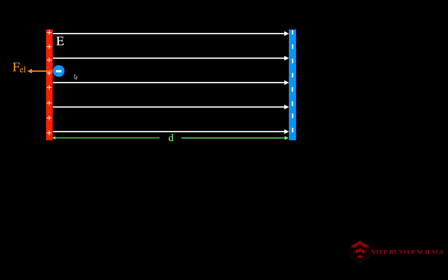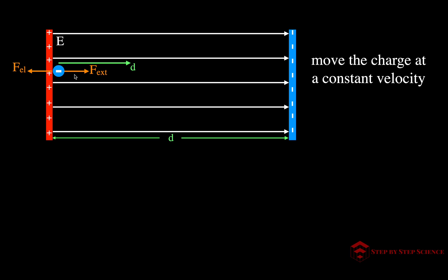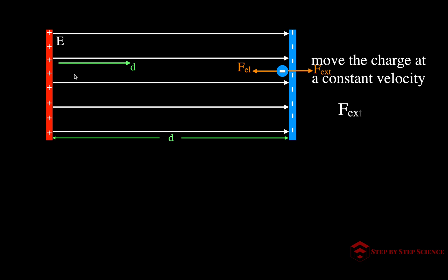In that field, there is an electric field force that points to the left. If we want to move that particle to the right — some distance, or all the way to the negative plate — we have to apply an external force. We apply that external force so that we move the charge through the electric field at a constant velocity, moving it all the way across. When we do that, the external force is equal to the force from the electric field.